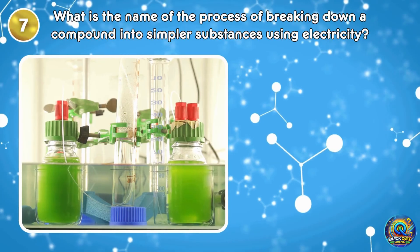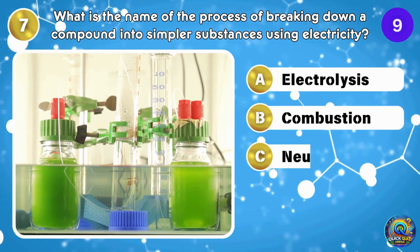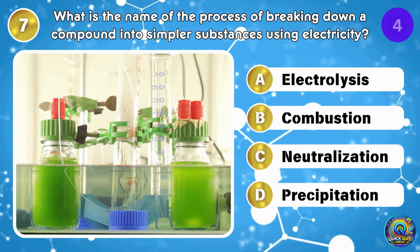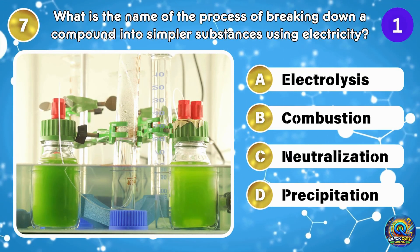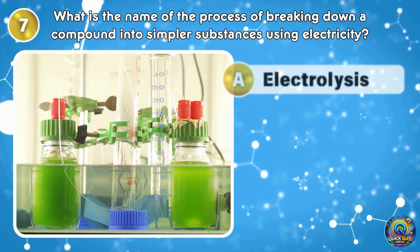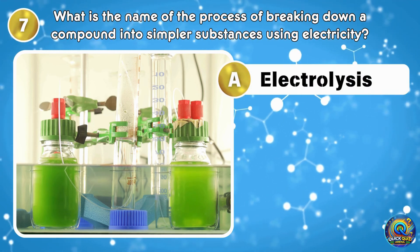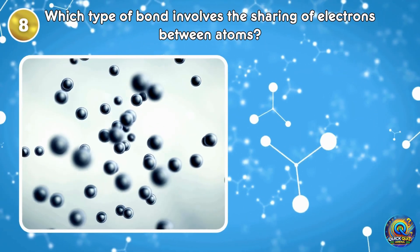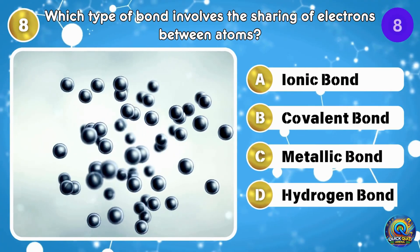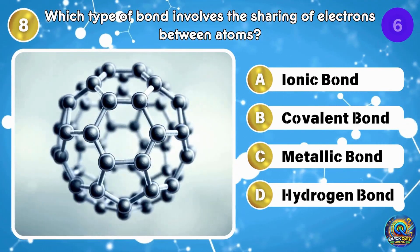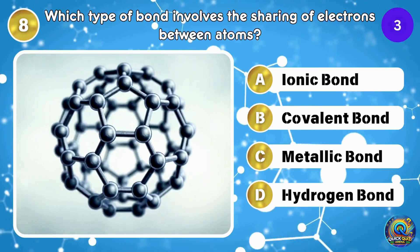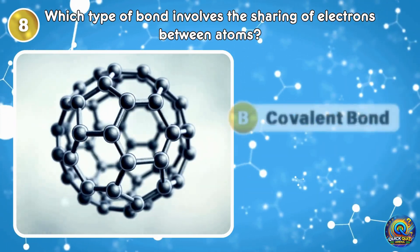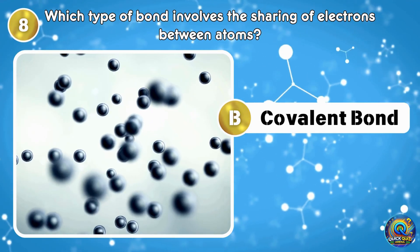What is the name of the process of breaking down a compound into simpler substances using electricity? The answer is electrolysis — splitting things up with a bit of electric magic. Which type of bond involves the sharing of electrons between atoms? The answer is covalent bond. Sharing is caring, even for atoms.